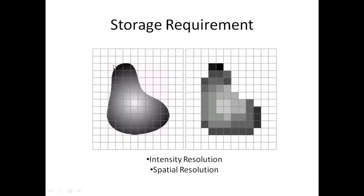Now for storage requirements: there is intensity resolution and spatial resolution. Intensity resolution refers to how many bits are used for each pixel. For an 8-bit image, I have 8-bit intensity resolution per pixel, allowing me to distinguish between 0 to 255 grey levels. Spatial resolution refers to the width of each pixel — smaller grids give better spatial resolution.